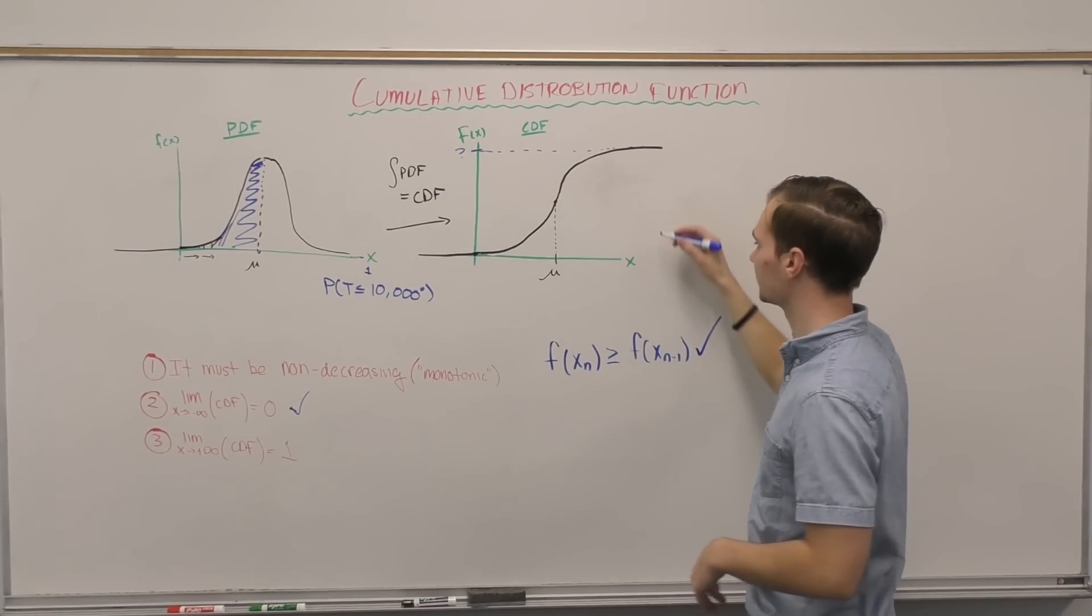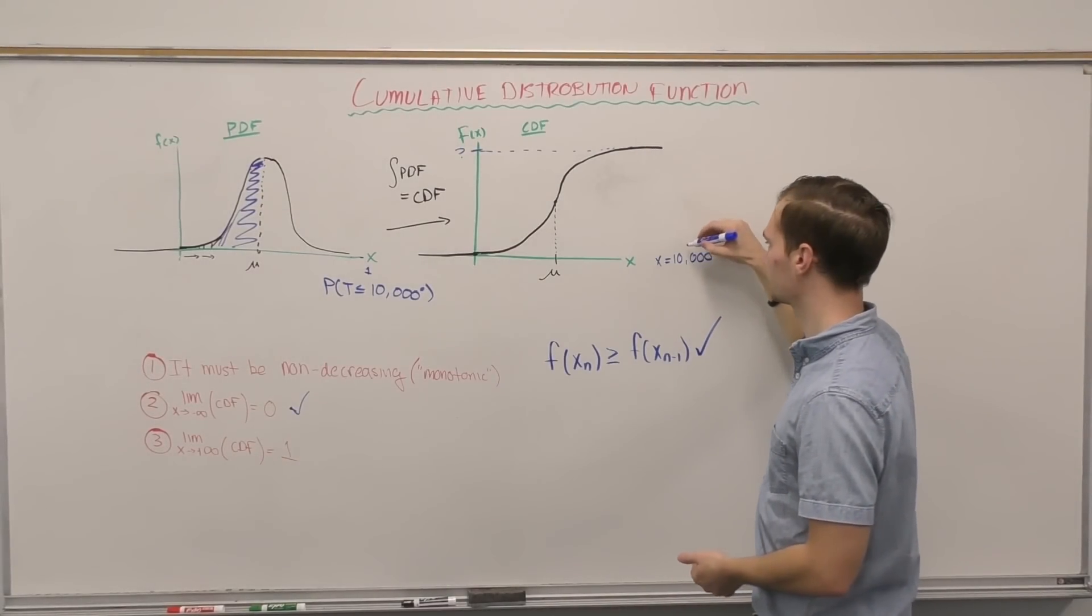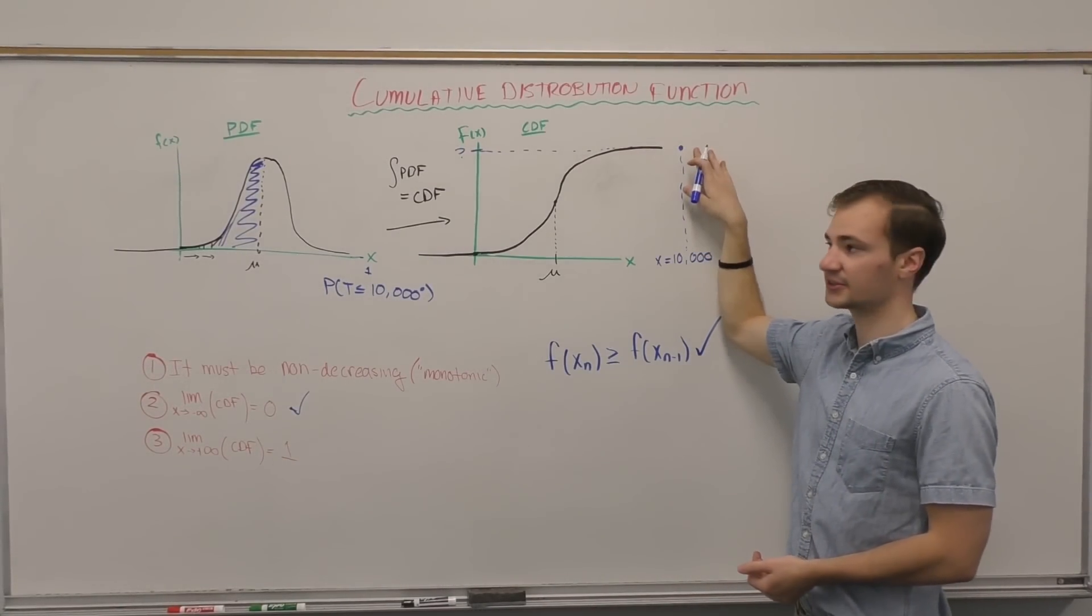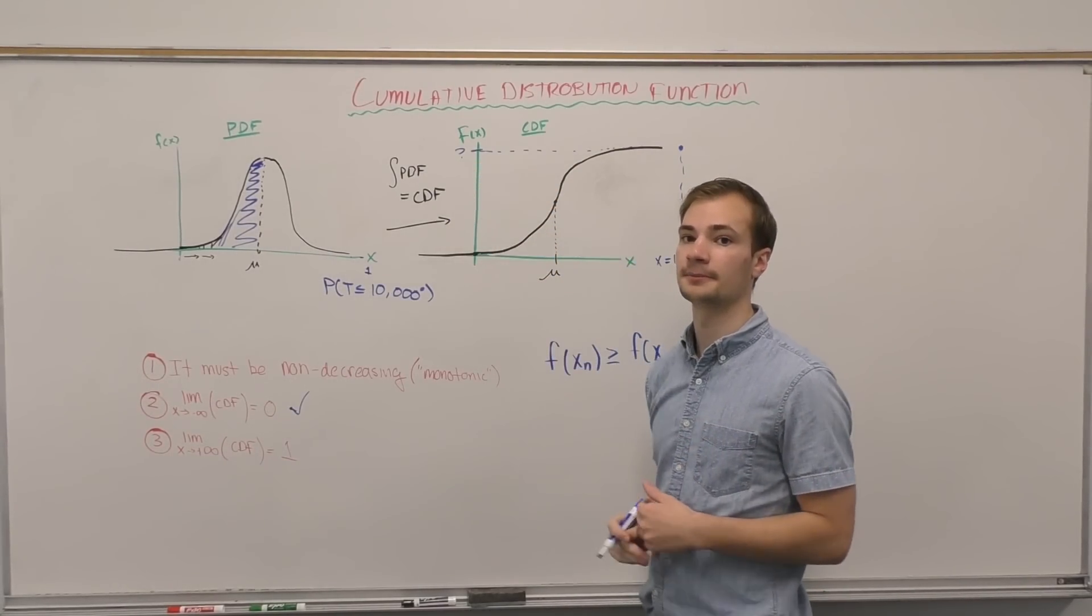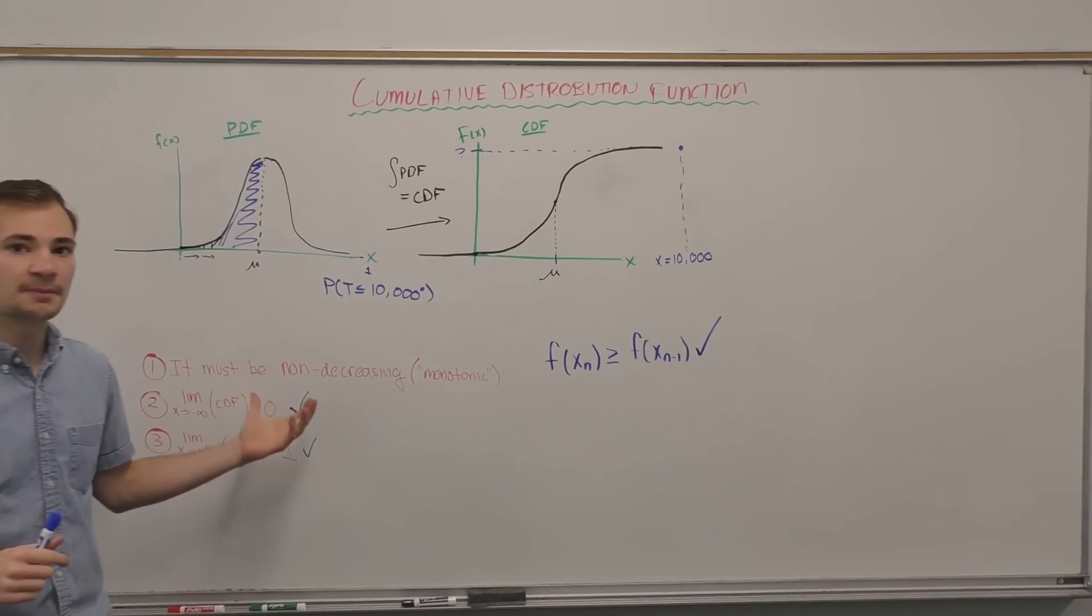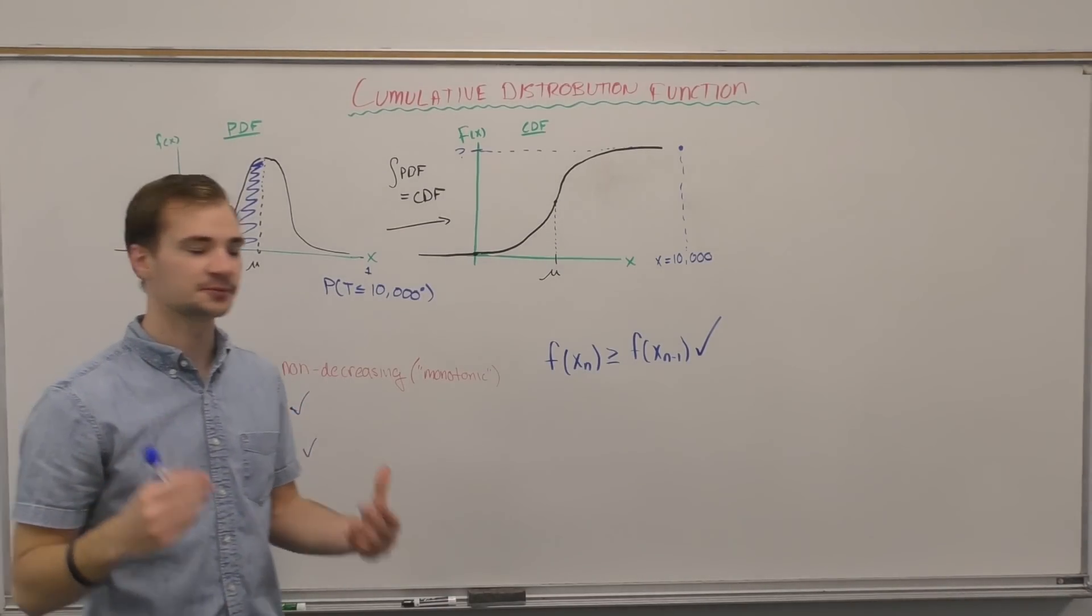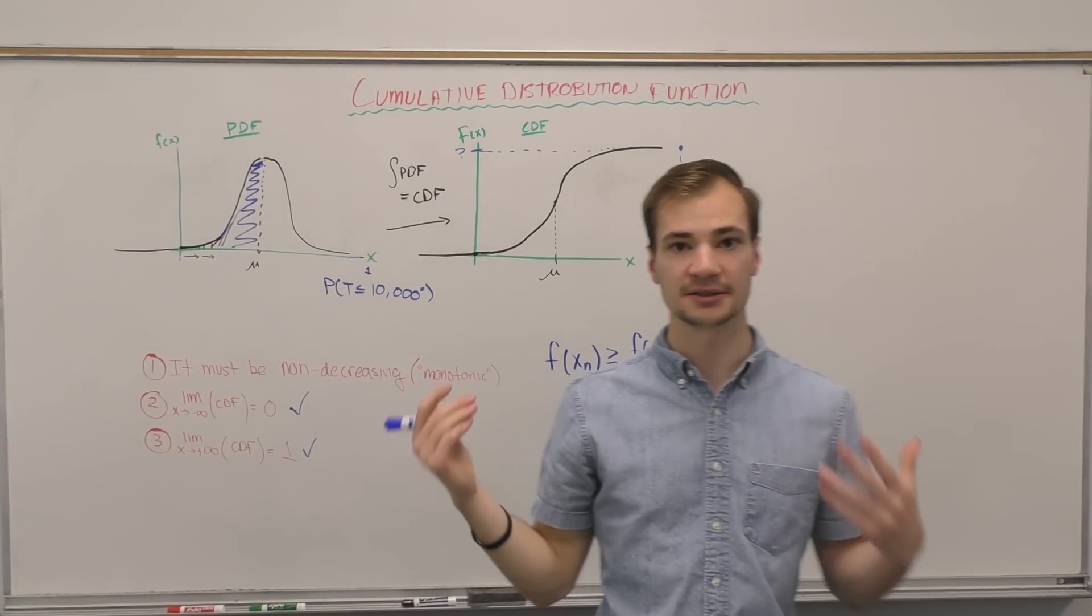And so that's what this tells us here. If we plugged in an x of 10,000 degrees, we'd hit this point on our CDF, which is an accumulated probability of one. So it matches all three of these truths, which means that this is a valid CDF.